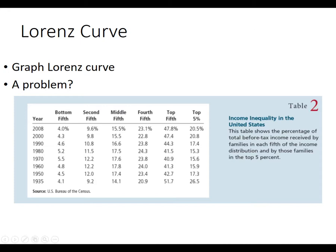In the United States, we get pretty good data on this because the census has income numbers every 10 years, and we also get IRS data by groups and by households. Back in 1935, the lowest 20% earned 4.1% of the income. The second fifth earned 9.2%, the next fifth earned 14.1%, the fourth fifth earned 20.9%, and the richest fifth earned 51% of the income. Of that top fifth, the richest 5% earned half of that.